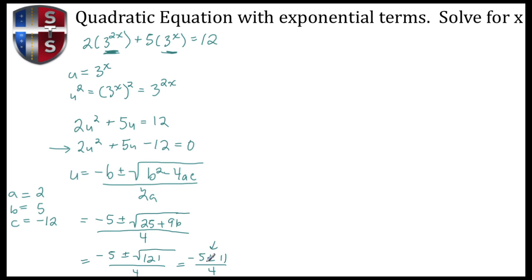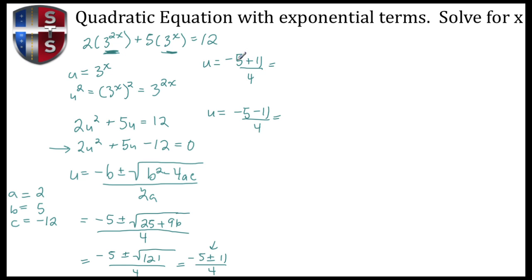Because of the plus or minus, I can separate this into two equations. The first is u equals negative 5 plus 11 divided by 4, and the second is u equals negative 5 minus 11 divided by 4. For the first: negative 5 plus 11 gives positive 6, divided by 4, which gives 3 halves. For the second: negative 5 minus 11 gives negative 16, divided by 4, which gives negative 4.